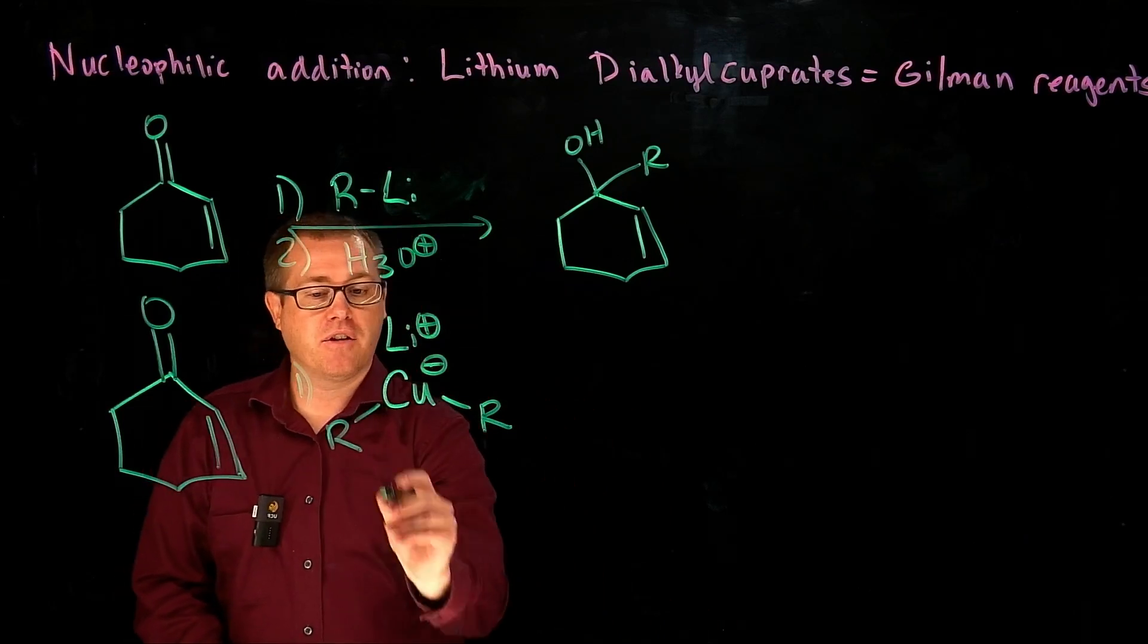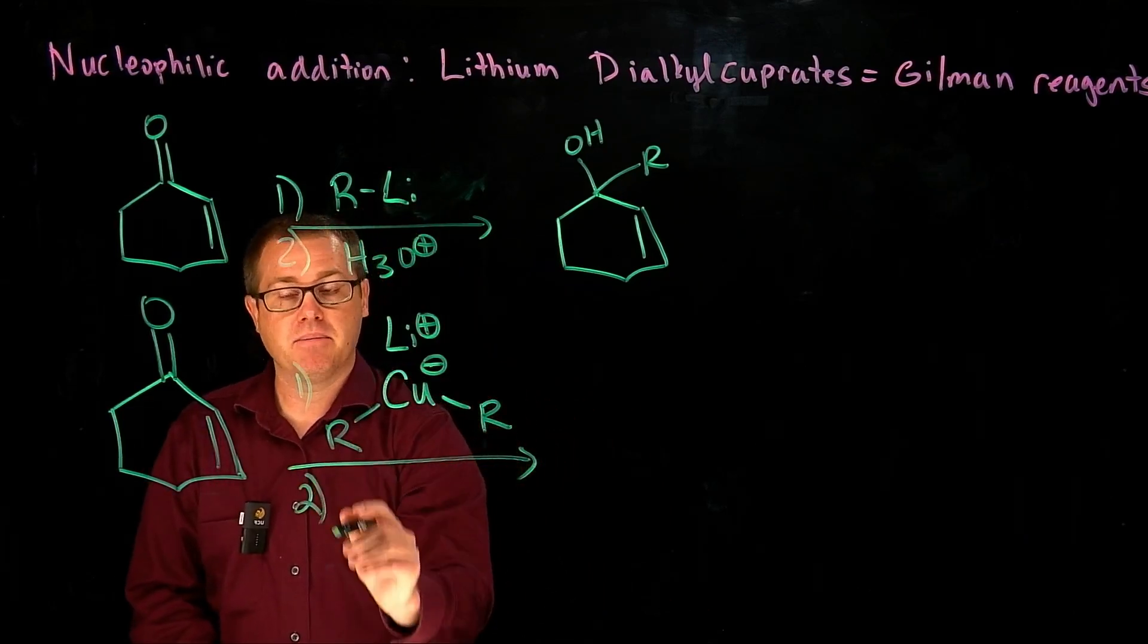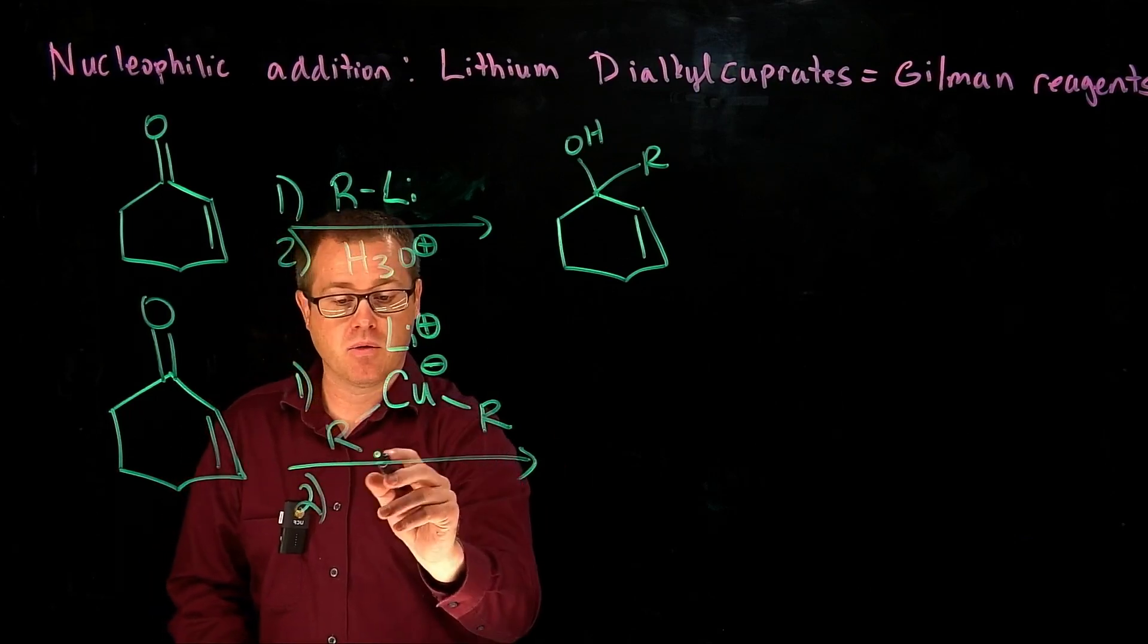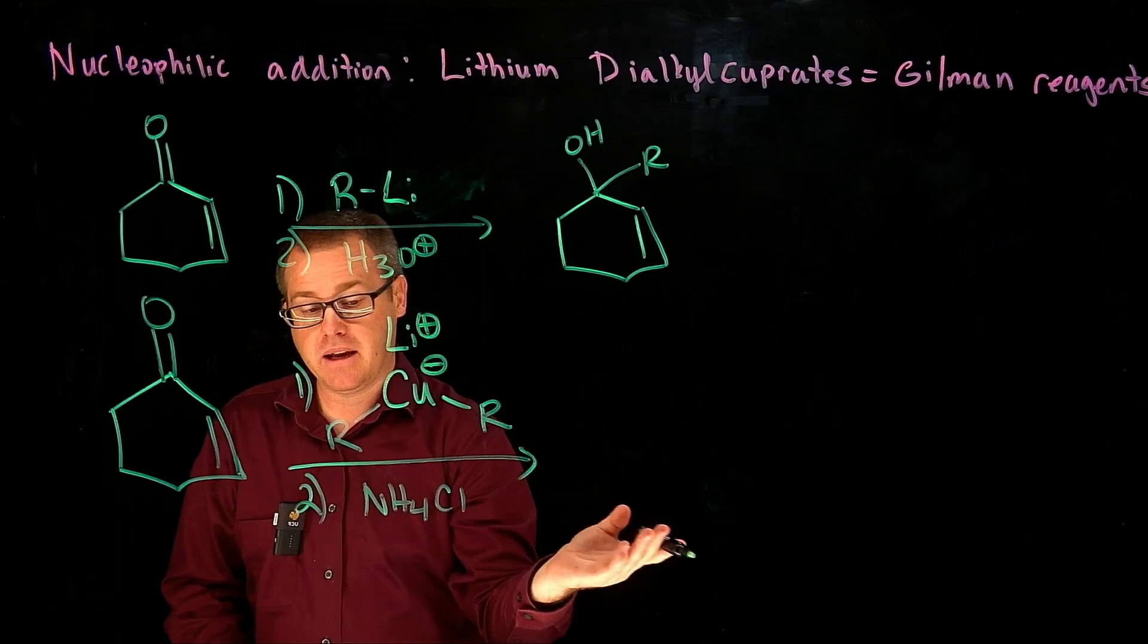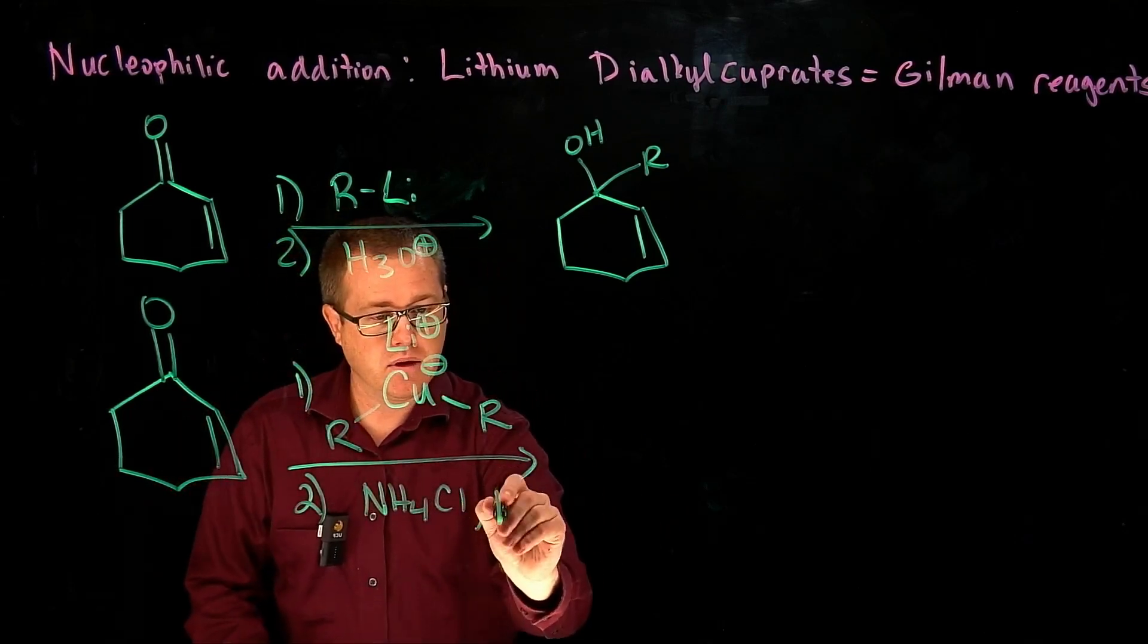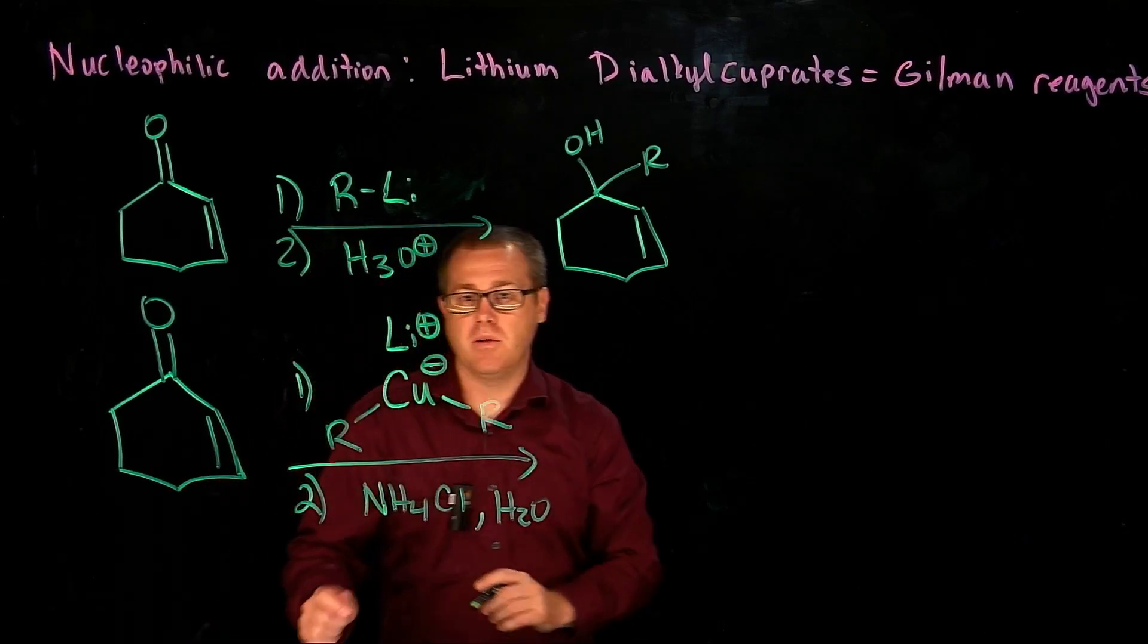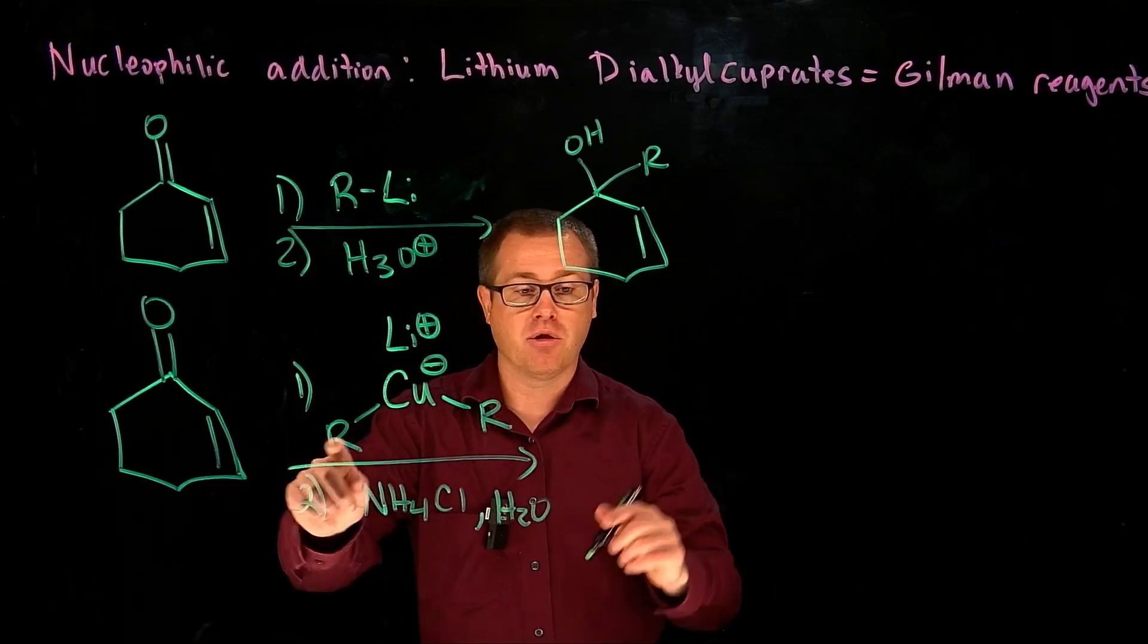And so we would do that in the first step, and then, like above, the second step, you're going to have an acidic workup. So we could use ammonium chloride if we would like, add a weak acid there.